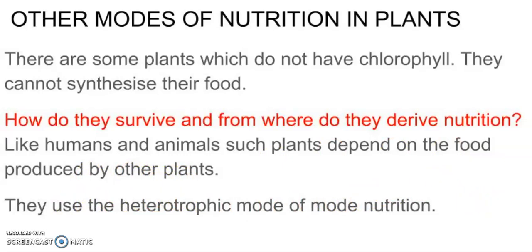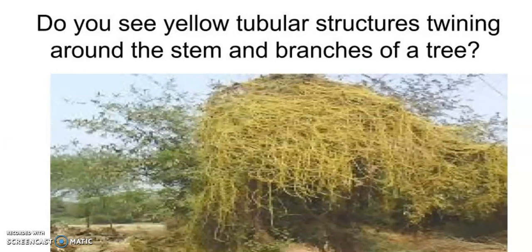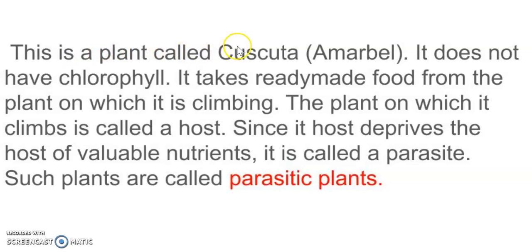In heterotrophic mode of nutrition, the first category of plants is parasitic plants. I would like you all to observe this picture. In this picture, you can see yellow color tube-like structures which are twined around the branch or tree stem. This is a plant called Cuscuta, which we call Amarbel in Hindi. It does not have chlorophyll. It takes ready-made food from the plant on which it is climbing. The plant on which it climbs and which provides it food is called a host.